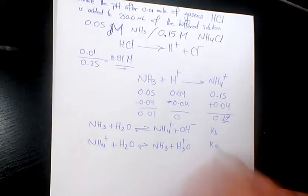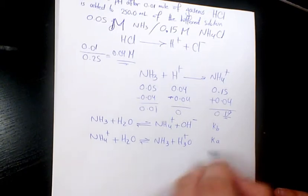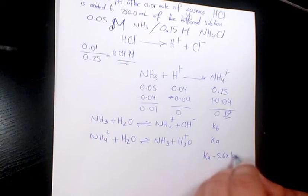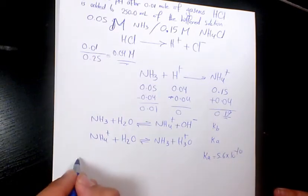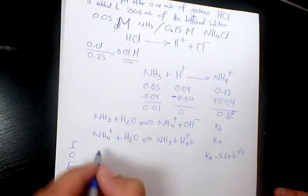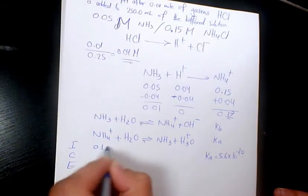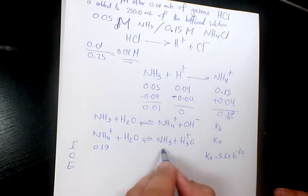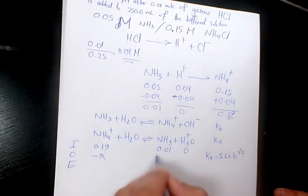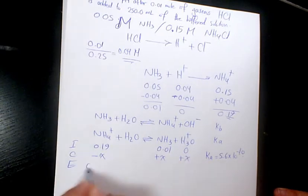For the second one you use Ka. Ka is 5.6 times 10 to the -10. Setting up an ICE table: initial concentration of NH4+ is 0.19, NH3 is 0.01, and H3O+ is approximately 0. Change: minus x, plus x, plus x. Equilibrium: 0.19 minus x, 0.01 plus x, and x.